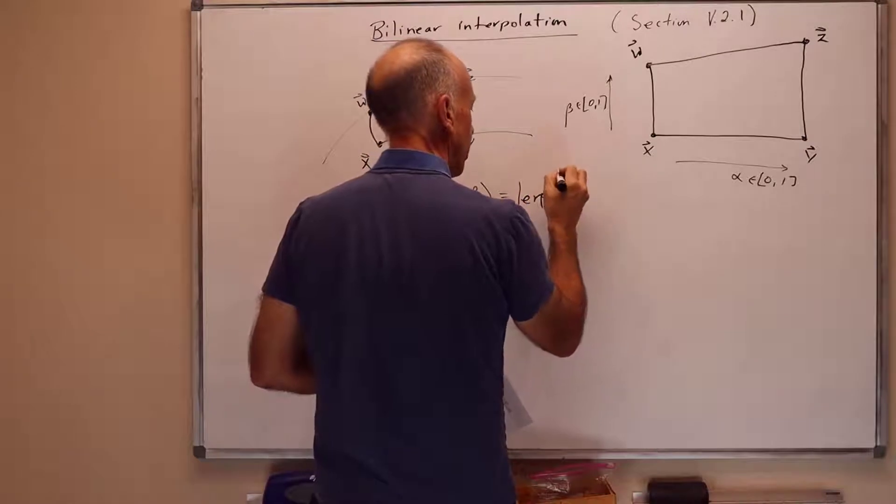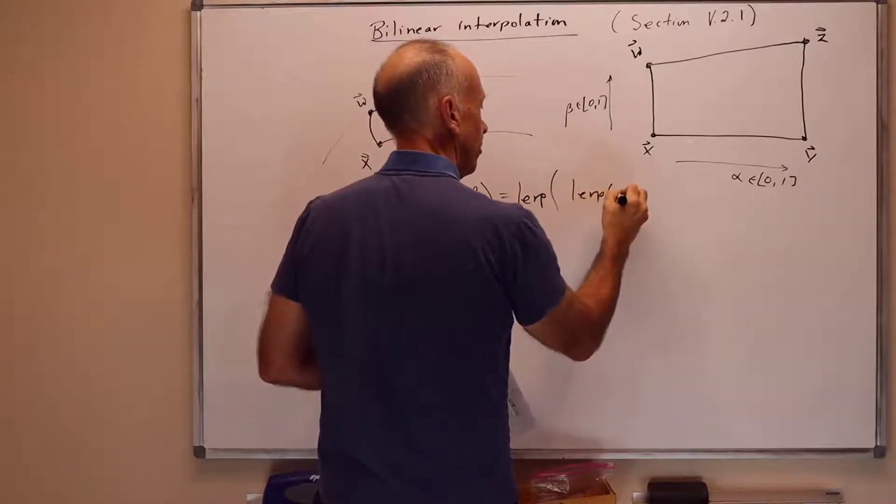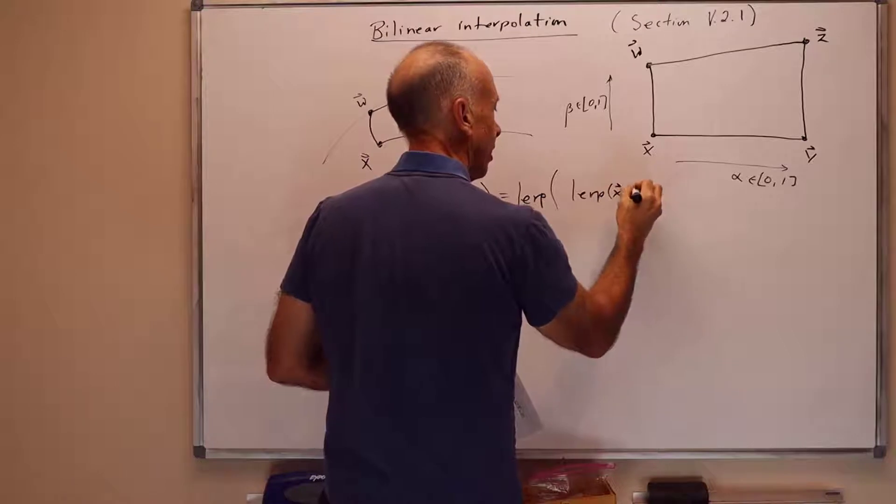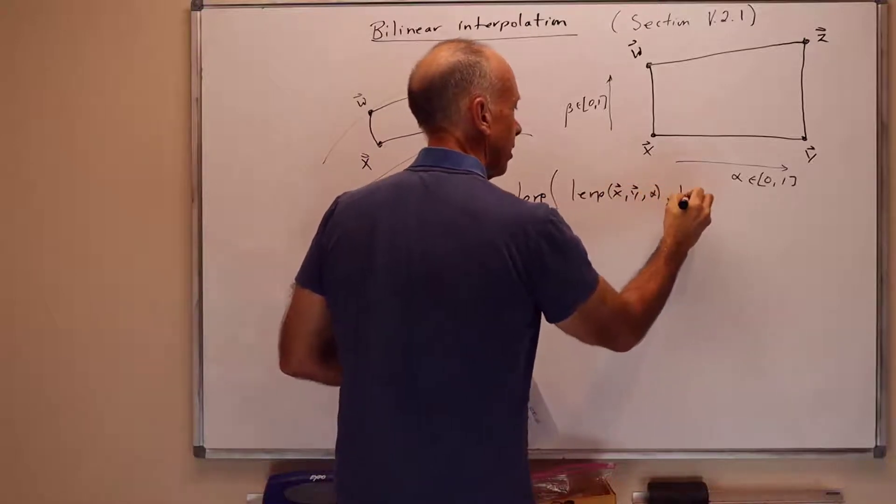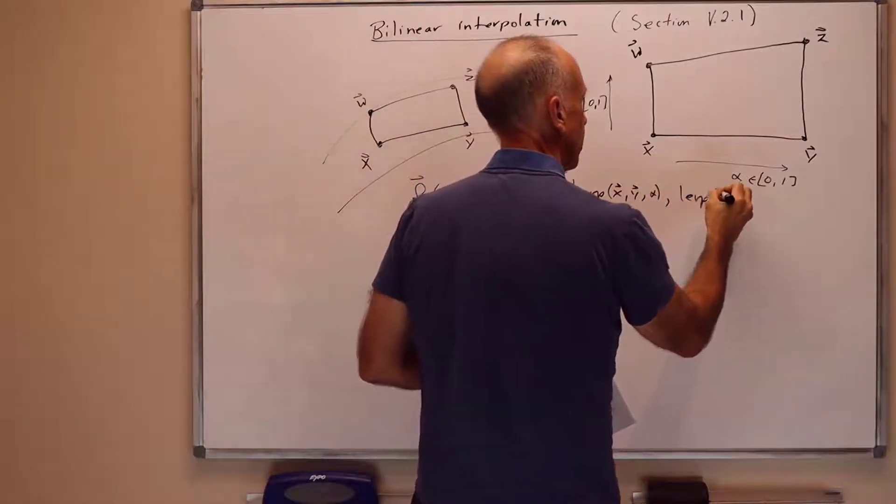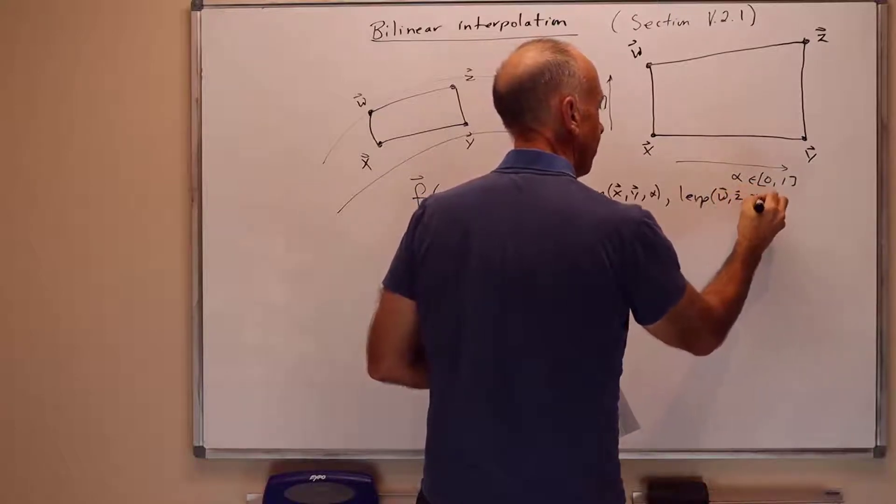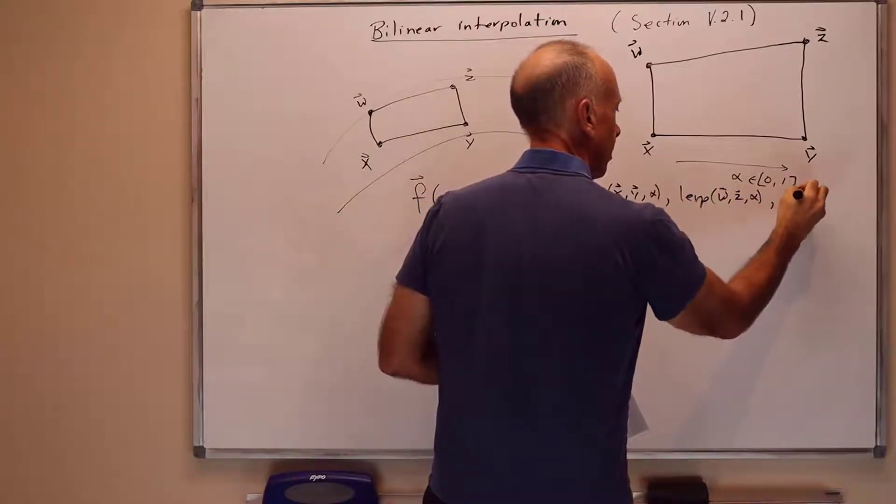We're going to LERP between LERP x, y, alpha, LERP w, z, alpha, comma, beta. So what does this mean?